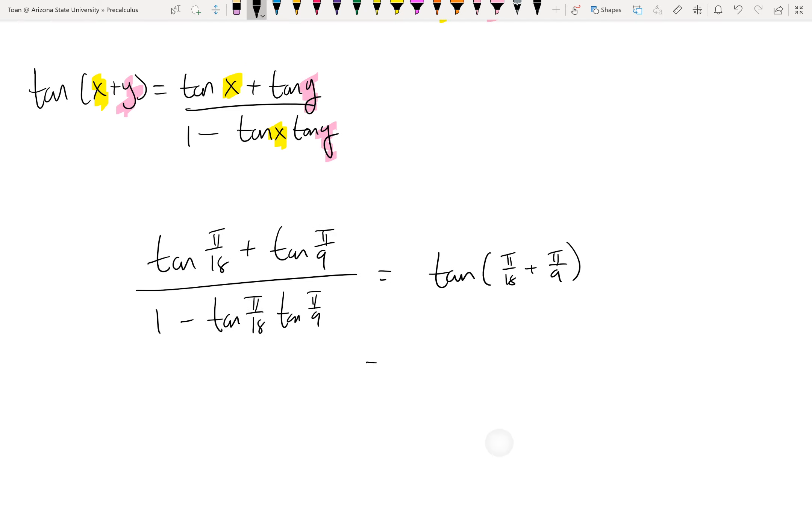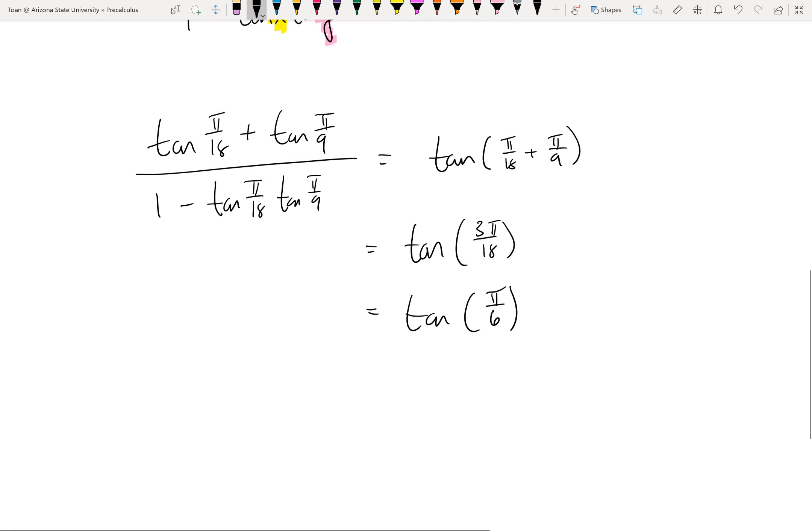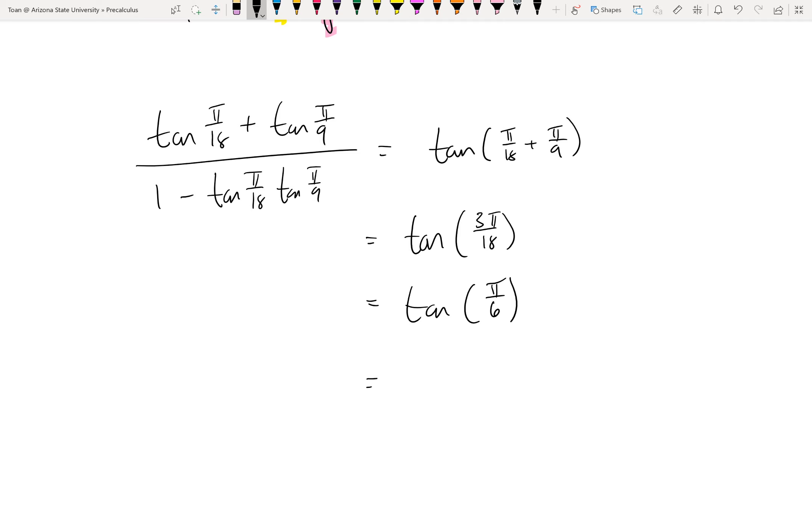So that's what we have to figure out. So pi over 18 plus pi over 9, that is 3 pi over 18, which is pi over 6, and this is a special unit circle angle, so it shouldn't take us a lot of thinking. We should know by now that tangent of pi over 6 radians is 1 over radical 3. That's it.